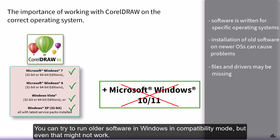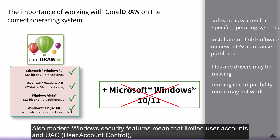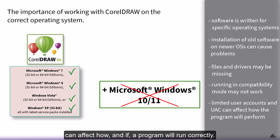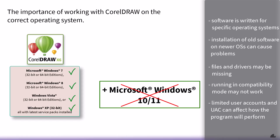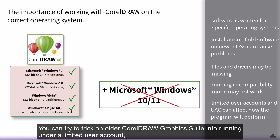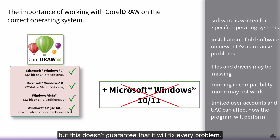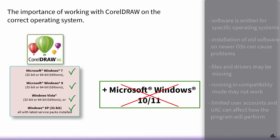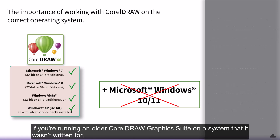You can try to run older software in Windows compatibility mode, but even that might not work. Also, modern Windows security features mean that limited user accounts and UAC (User Account Control) can affect how and if a program will run correctly. You can try to trick an older CorelDraw Graphics Suite into running under a limited user account, but this doesn't guarantee that it will fix every problem.